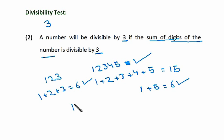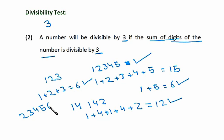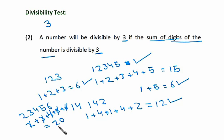Suppose we have the number 14142. So 1 + 4 + 1 + 4 + 2 equals 12, and 12 is divisible by 3. Now we'll take one more example: 23456. So 2 + 3 + 4 + 5 + 6 equals 20, and 20 is not divisible by 3. I hope you understood — all we need to do is add the digits of a particular number, and if the sum is divisible by 3, then the whole number is also divisible by 3.